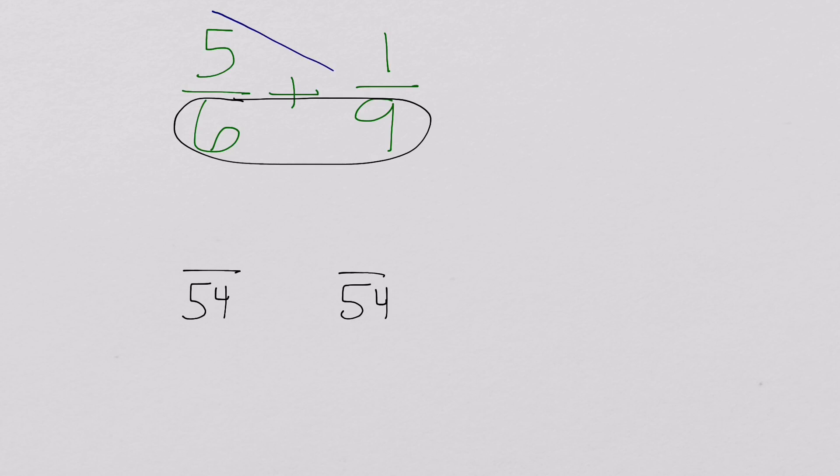Cross multiply, so 5 times 9. Remember, we used the numerator on this side, so we're going to put it down here. 5 times 9 is 45.